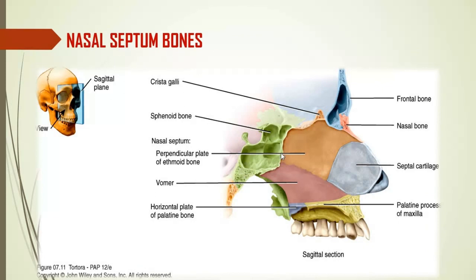The nasal septum bones: anteriorly you have the nasal septum cartilage, posteriorly you have the perpendicular plate of the ethmoid bone, and at the posterior most you have the sphenoid bone, which has air sinuses.